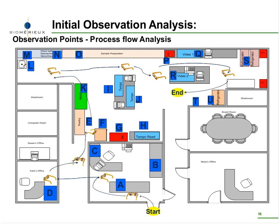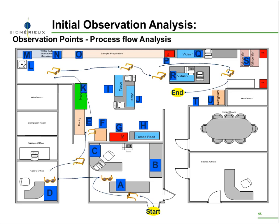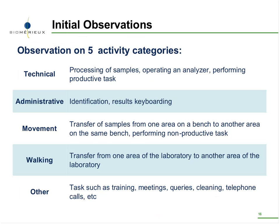Looking at the current situation and identifying the extra transportation and waste in the process, a future state spaghetti chart was developed which significantly reduced the amount of motion, extra transportation, and other lean waste. When building the spaghetti chart, there were five key activity categories we focused on: how much technical activity is currently happening in the lab, to what level, and is there any variation between staff-to-staff or shift-to-shift? Is the process on target? How much admin work is happening — is there barcoding or is it manual? How much duplication is happening when data is being recorded?